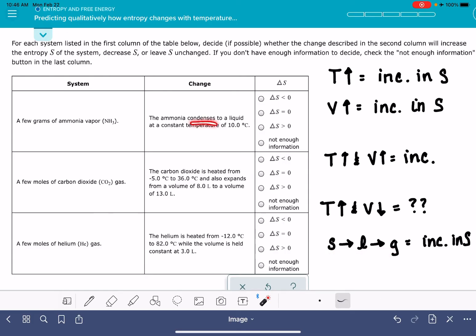So this first one is talking about condensation, which is gas going to a liquid. So that means this is going to be a decrease in entropy, the value of delta S is going to be a negative number.